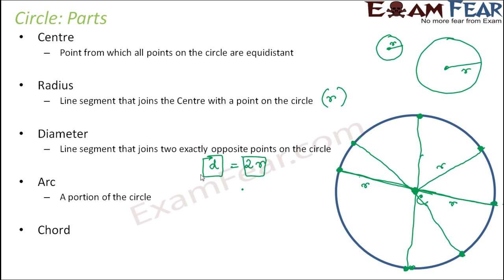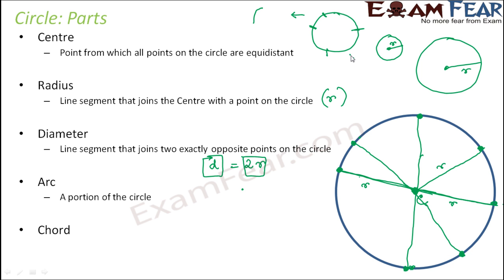Next is arc. An arc is any particular portion of the circle. If you cut a portion of the circle, what you get is an arc. You consider any portion of the circle — that's an arc.